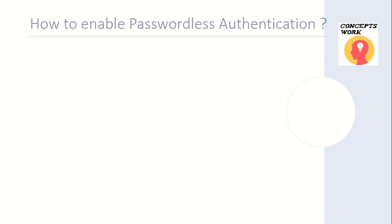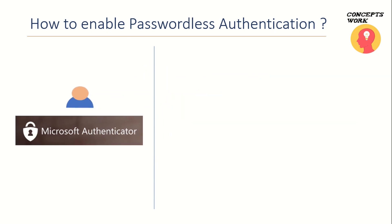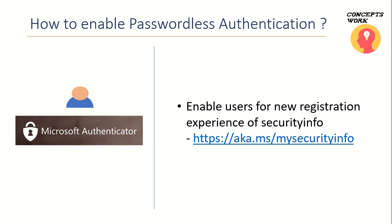To enable passwordless authentication, the first thing you have to do as an admin is ask your users to install the Microsoft Authenticator application, available for both Android and iOS. Once installed, the app must be registered per user so that a particular instance can be used for passwordless sign-in. There is now a new converged registration portal known as aka.ms/mysecurityinfo, replacing the separate MFA and SSPR setup portals.